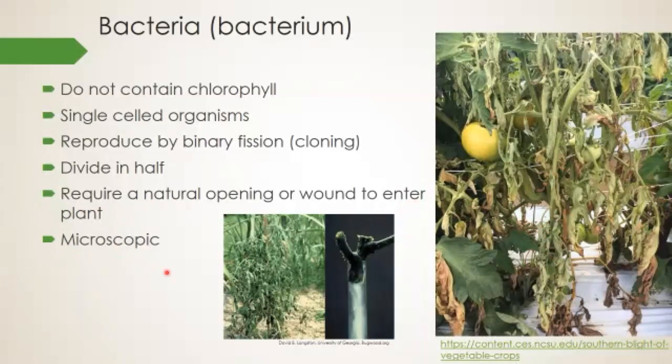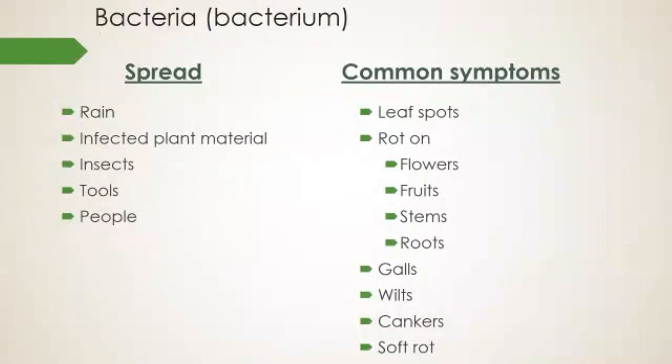Bacteria are microscopic, whereas fungi can sometimes be seen with the naked eye. Bacteria spreads through rain and water splashing up — like fungi — as well as infected plant materials from propagation, nurseries, and pots. They can also be vectored through insects and carried on garden tools. Fungi and bacteria can both live on dead tissue in the soil for up to a couple of years. That's why it's important to remove any diseased or spent plant tissue that's fallen to the ground and clear out everything from last year — or put it into a compost system. Keeping the garden clear of decaying material will help reduce bacterial and fungal spread.